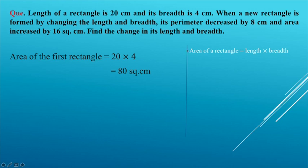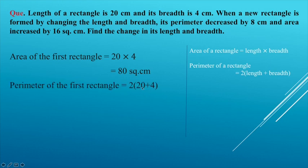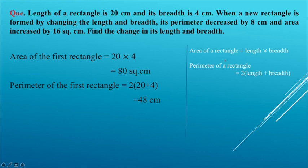The perimeter of the first rectangle is 48 cm. Since the perimeter decreased by 8 cm, the perimeter of the new rectangle is 48 minus 8, which is 40 cm.